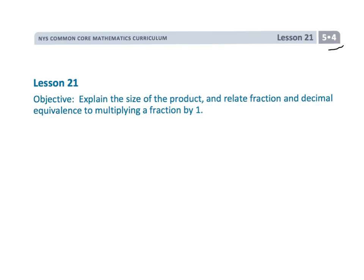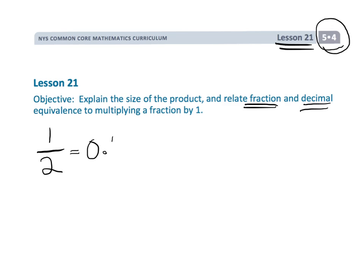This is 5th grade, module 4, lesson 21. In this lesson, we're going to be relating fractions with their decimal equivalents. For example, we all know that 1 half is equal to 0.5, or 5 tenths.